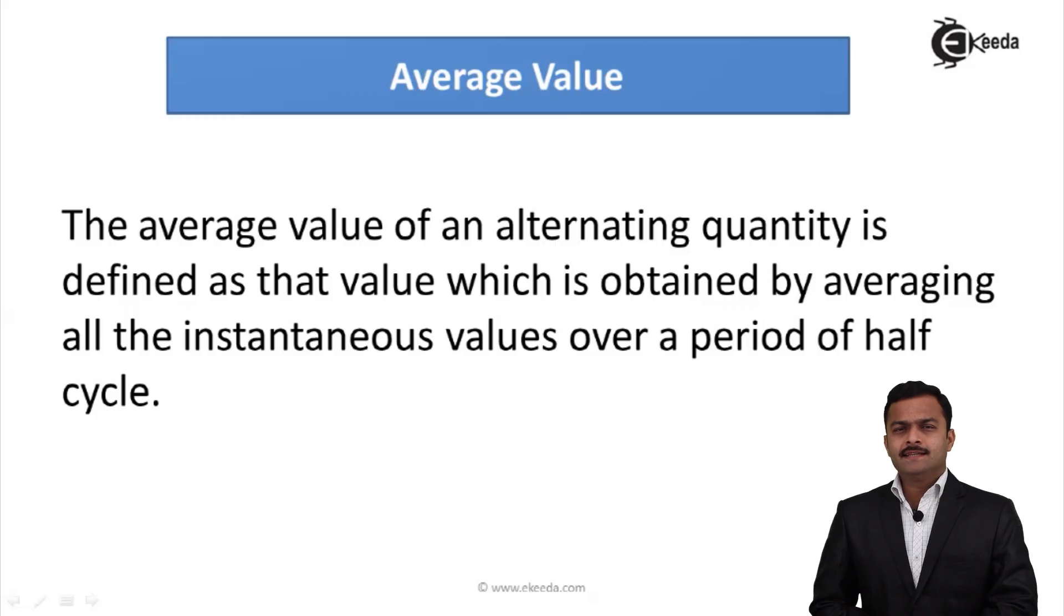Hi friends, in this video we are going to see one more important parameter of AC voltage waveform and that is average value. Let's see the definition of average value. The average value of an alternating quantity is defined as that value which is obtained by averaging all the instantaneous values over a period of half cycle.